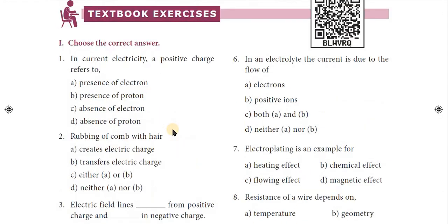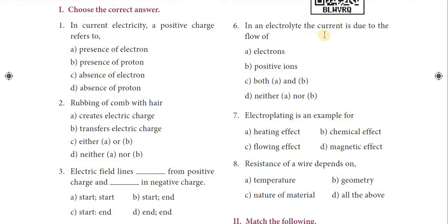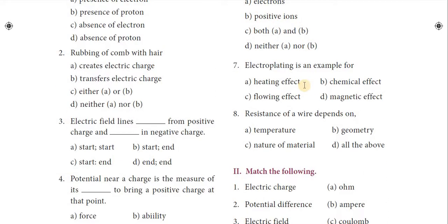Sixth question: in an electrolyte, the current is due to the flow of both A and B — electrons and positive ions. Option C — both A and B — is the correct answer.